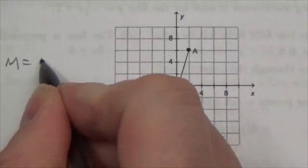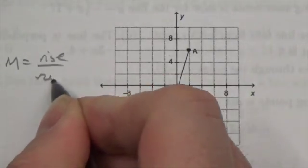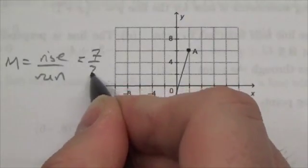So knowing that slope here is rise over run, we can see right away that this is going to be seven over two.